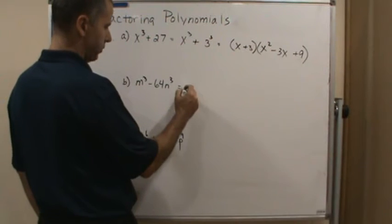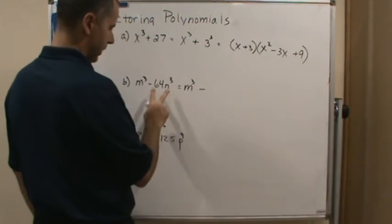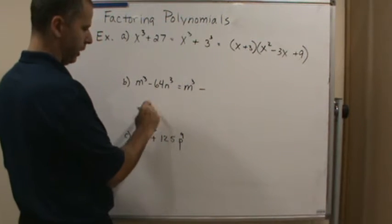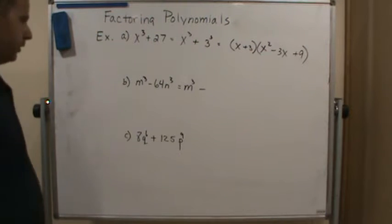So we got m cubed here so we don't have to do anything with the m. So that's m cubed minus, and let's rewrite this as a cube. Well, what cubed equals 64? And that's going to be 4. 4 cubed is 64.